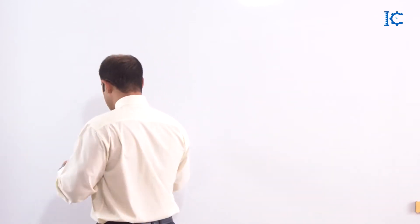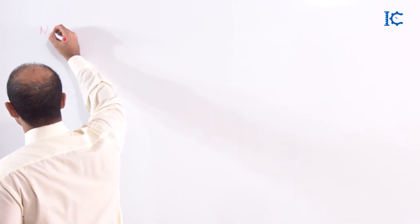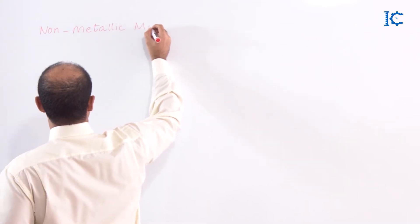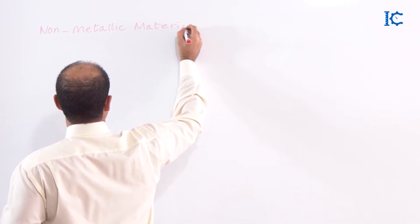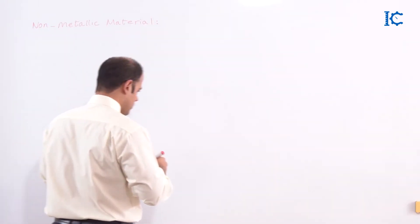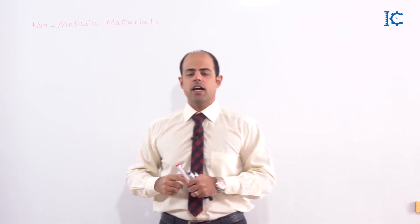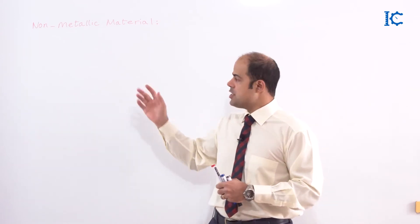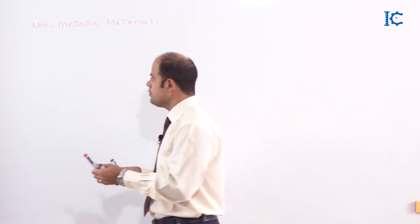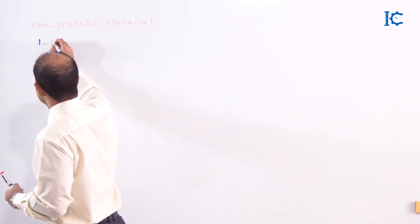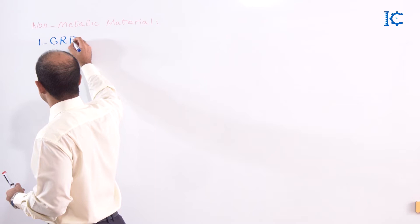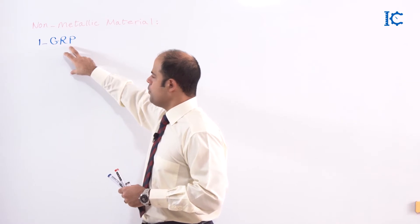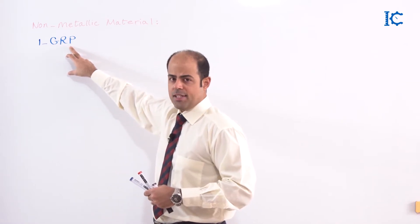So first of all, let me write these things for you — non-metallic materials. As an example, one of the most popular and common materials in this category is GRP. GRP stands for glass reinforced polymer, or it is often referred to as glass reinforced plastic.